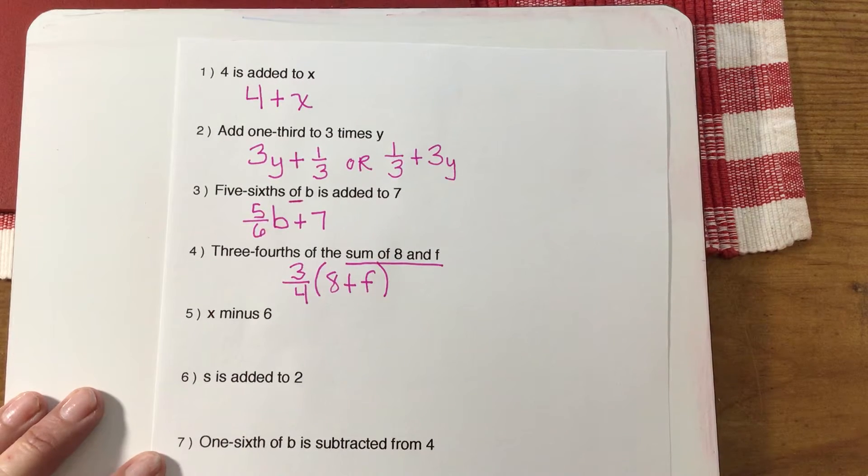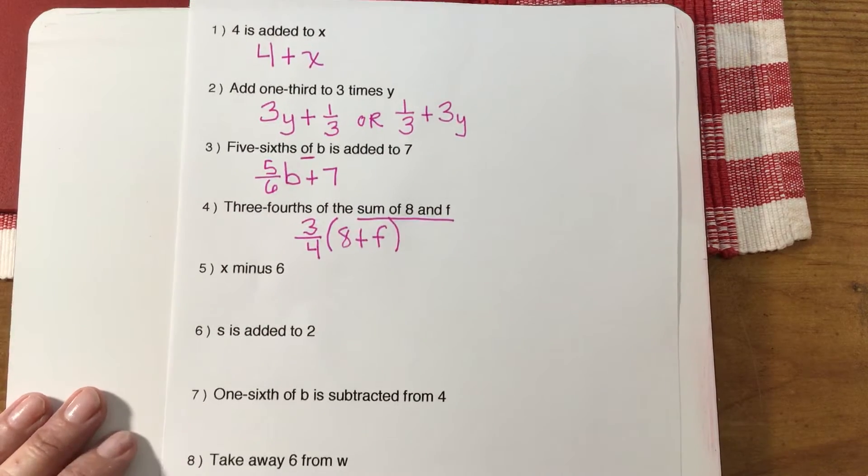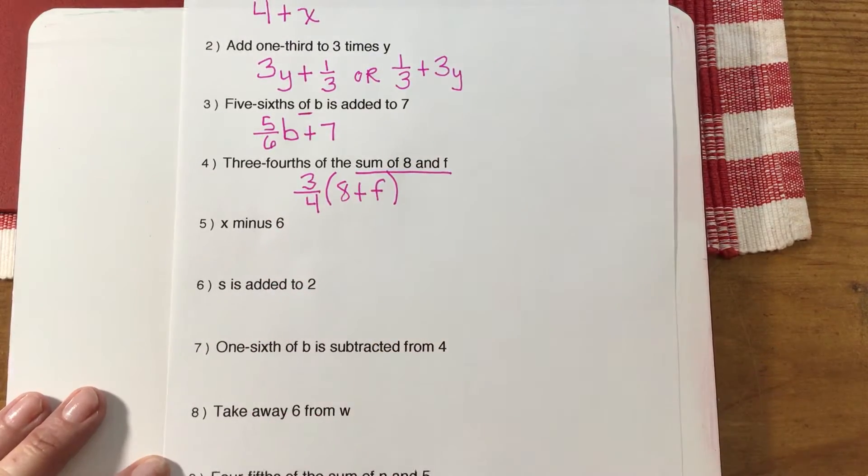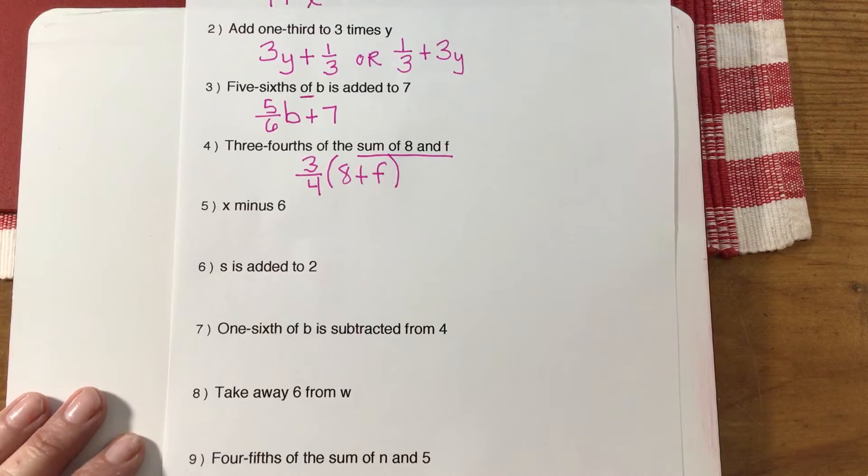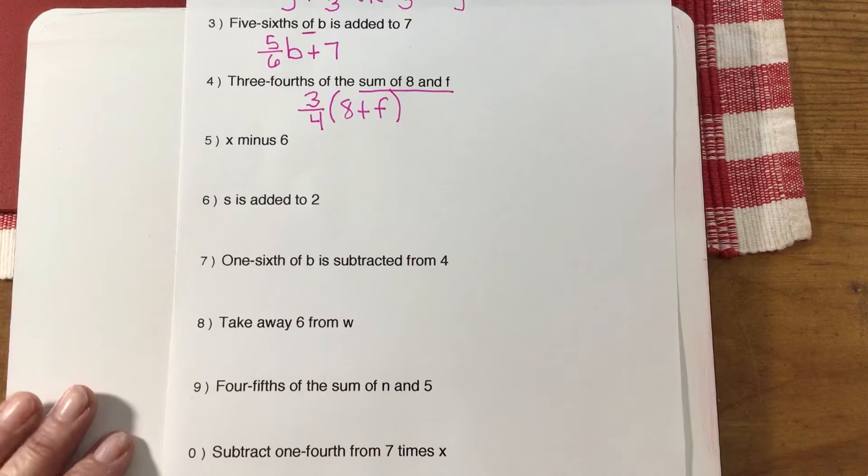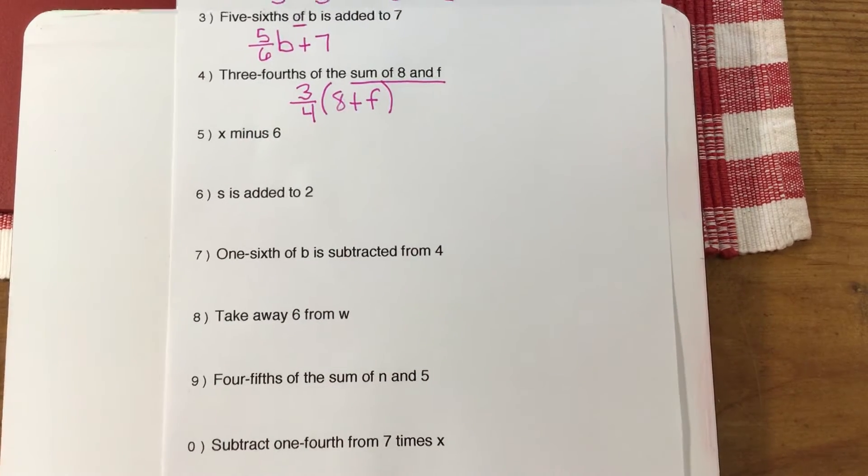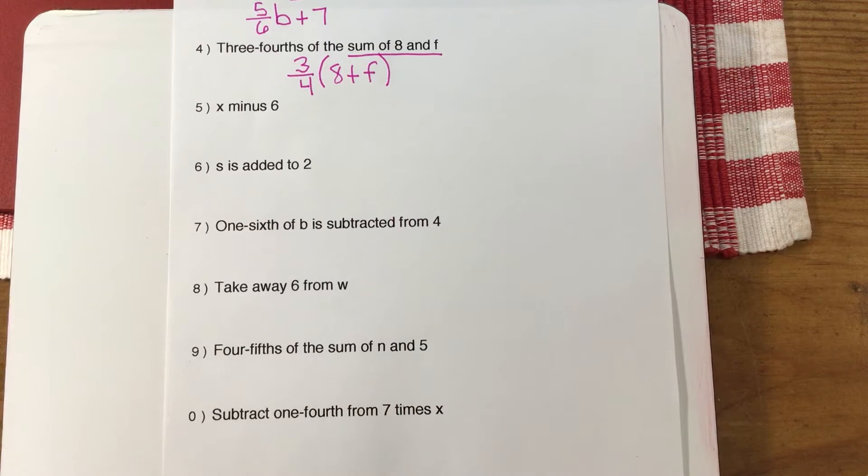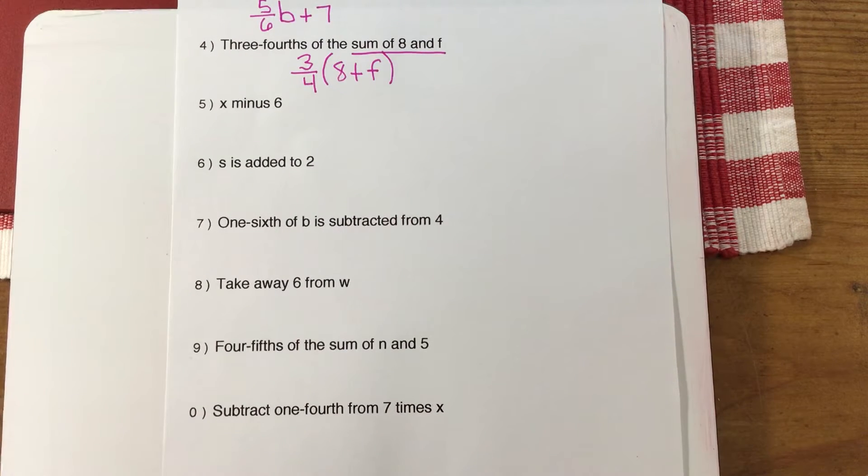What I'd like to do is I'd like you to pause the video and I'd like you to do the next ones for me: five, six, seven, eight, nine, and ten. This is supposed to say ten—I think it got cut off when I printed it. Pause the video, go ahead and see if you can solve these problems, changing them into numerical expressions.